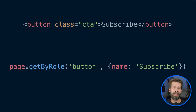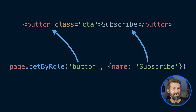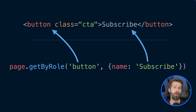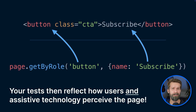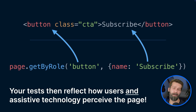page.getByRole, on the other hand, checks for user-first or accessibility-first attributes. So when we try to locate this button, getByRole('button') checks for the ARIA role of button — you're kind of forced to use proper markup — and then it also checks for an accessible name of 'subscribe'. I'm a huge fan of this approach because when you're using the recommended Playwright locators, you're forced to consider usability, UX, and support for assistive technology, which leads to a better product in the end.